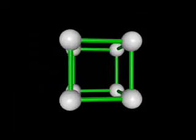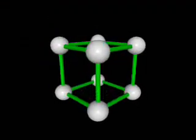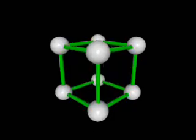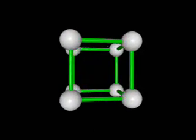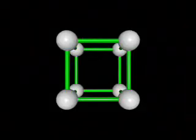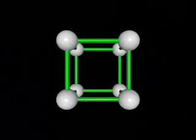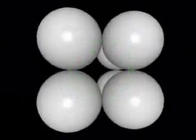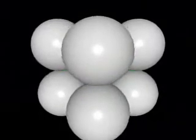The simple cubic lattice is the simplest lattice structure and consists of eight atoms at the eight corners of a cube. In the ball and stick model shown here, the distances between the atoms are greatly exaggerated. In actuality, the atoms are packed much more closely together and touch somewhere in the structure. A more realistic model of this structure is the space filling model, where the size of the atoms is in correct proportion to the cell.